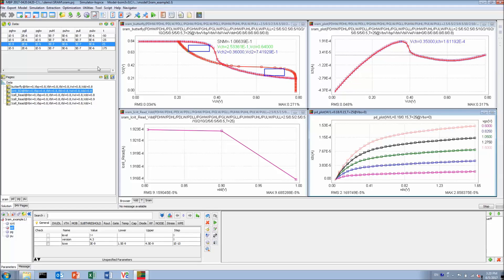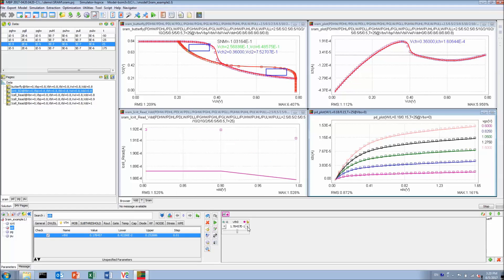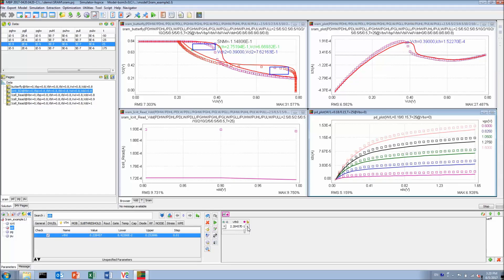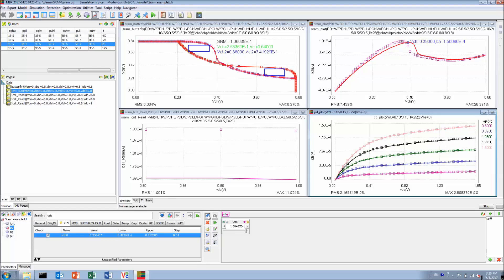On those graphs, the symbols are measured data and the solid lines are the simulation data. At the bottom of MBP GUI, we have the SRAM sub-circuit model where we can access all the parameters. For example, let's find the VTH0 from the pull-down device. While we tune it, the simulation curves update as well as the numbers on the graphs, such as the static noise margin and the peak value on the N-curve.